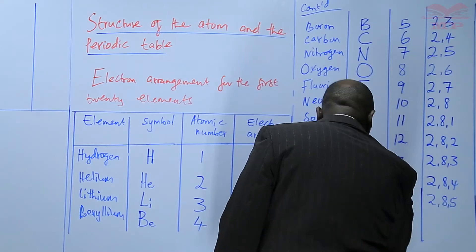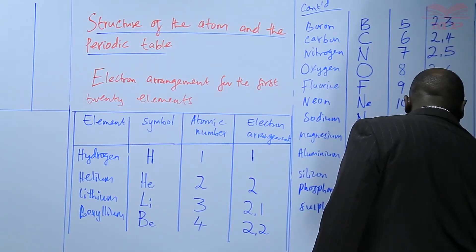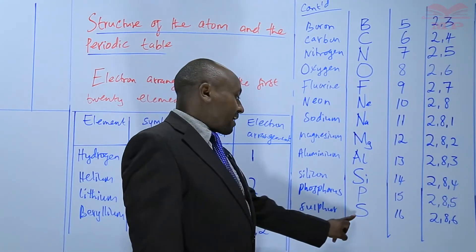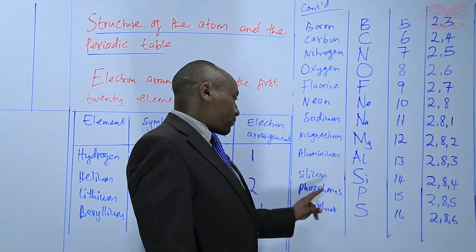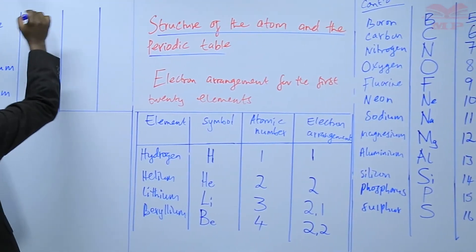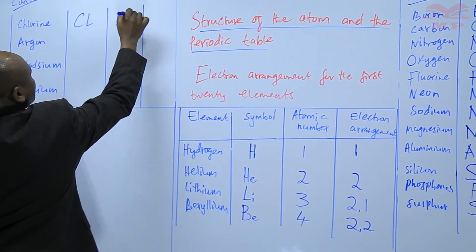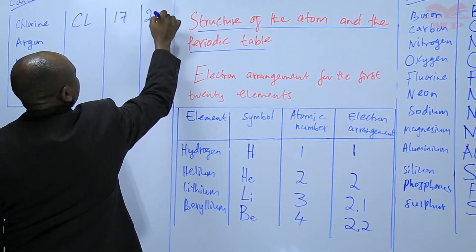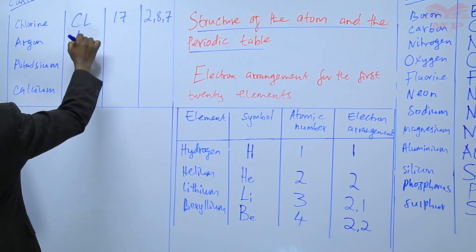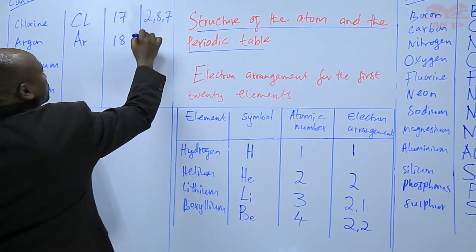Sulfur - it's S, atomic number 16, arrangement 2, 8, 6. Do not confuse the symbol for sulfur and silicon. Sulfur is S, silicon is Si - these are different. We go to chlorine, symbol Cl, the atomic number is 17. The arrangement is 2, 8, 7. Then argon - Ar, atomic number 18, arrangement 2, 8, 8.